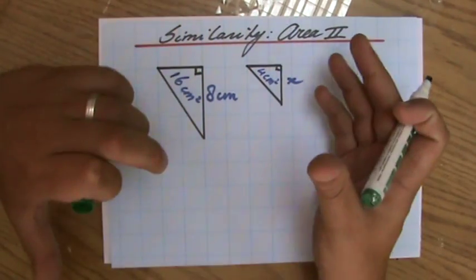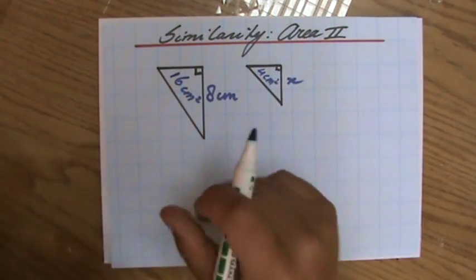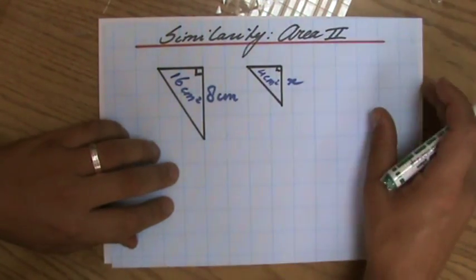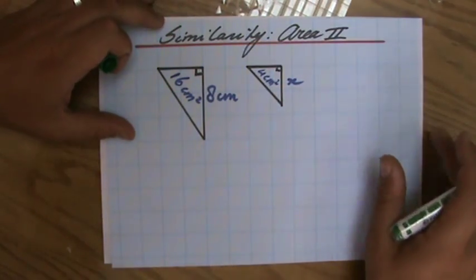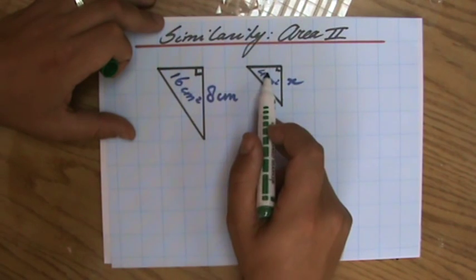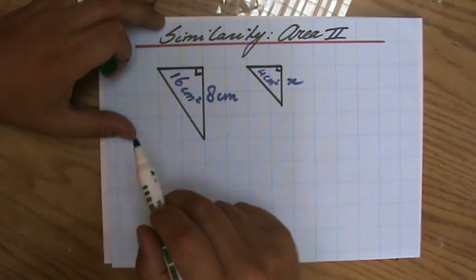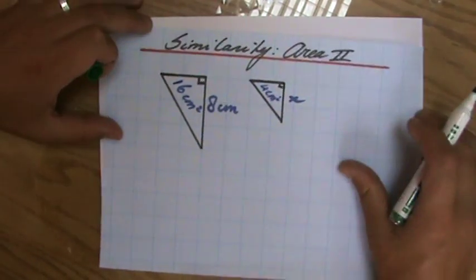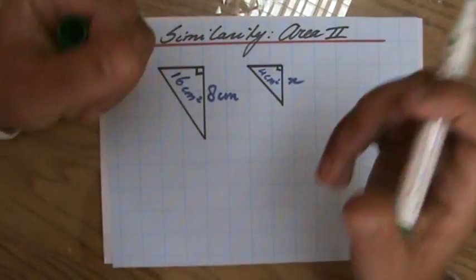So it's a combination of similarity with area and similarity involving lengths. Now some students who don't really understand what similarity is and just are happy with writing something down will say well that is four times as small, so a divided by four. They're going to say x is two centimeters, and they're like yes I've got something on paper.